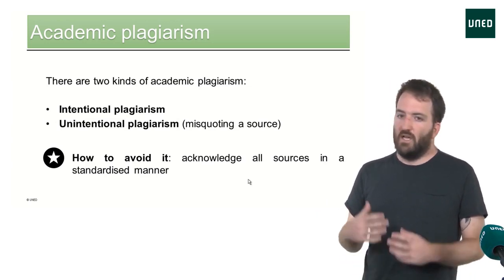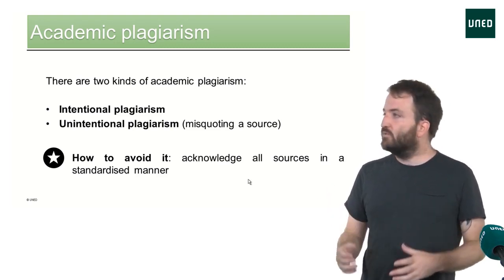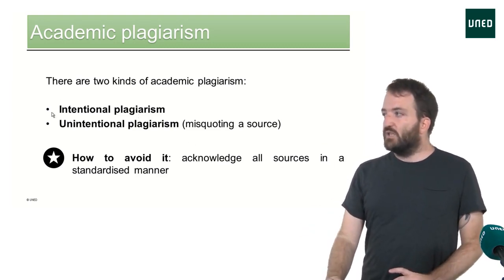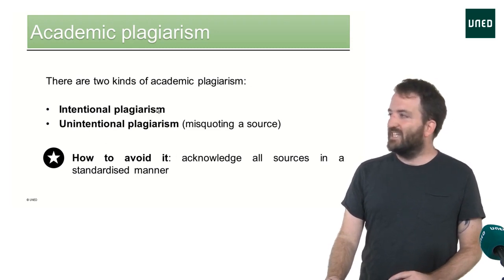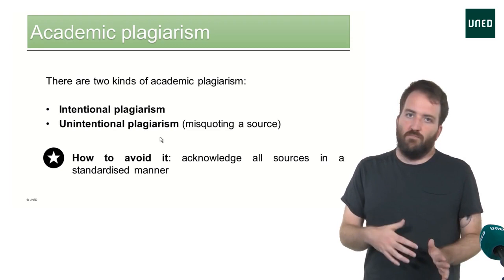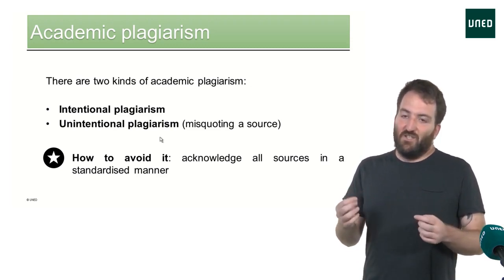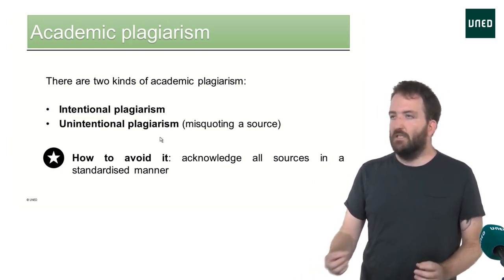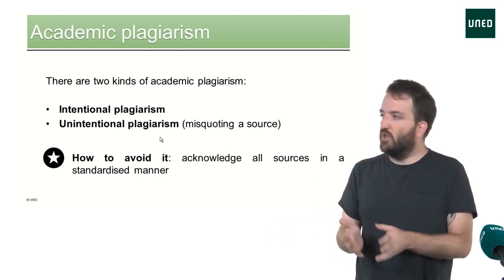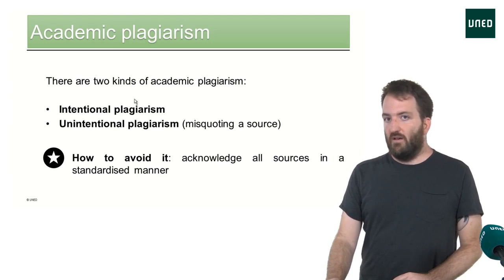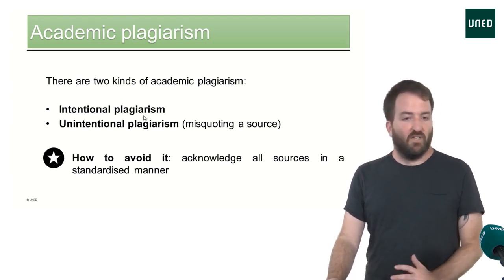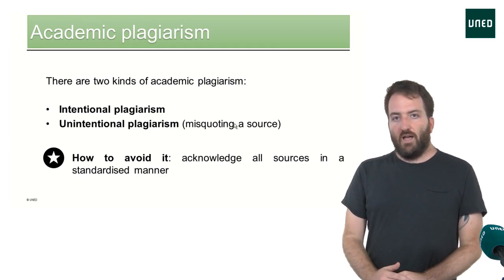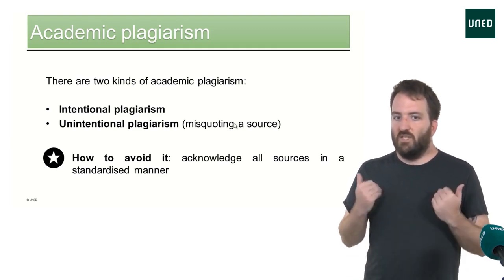The first kind is the one we may be thinking of — the basic one — which is intentional plagiarism: I take something from somewhere and pretend it's mine. But there is also a second kind, which is equally important: unintentional plagiarism. Unintentional plagiarism is not mentioning correctly, or not mentioning at all, a source by accident or by mistake — but in the end you are committing the same act, not acknowledging the source. It is very important to be careful with this, and we recommend always reviewing that you are making reference to all your sources.